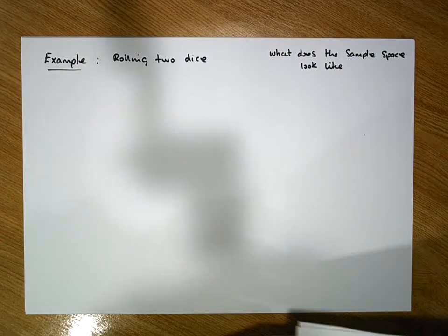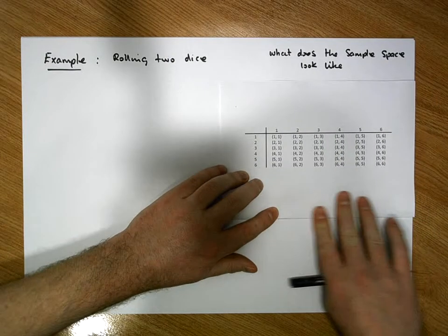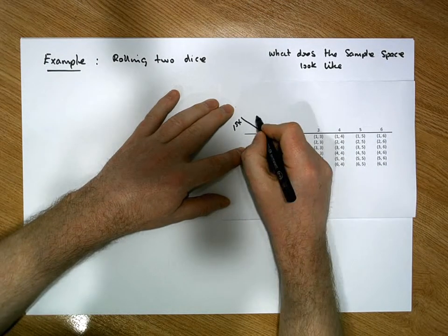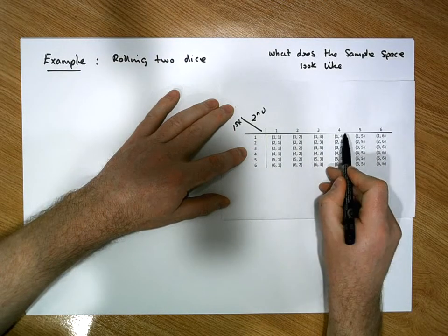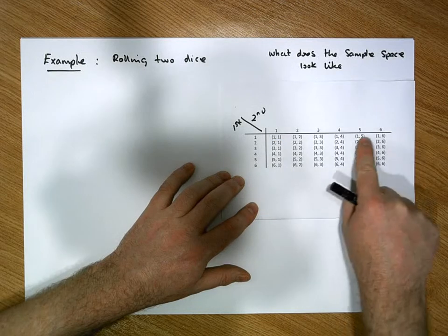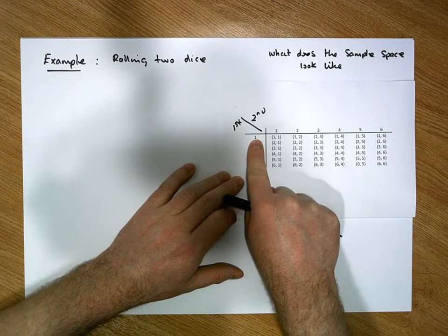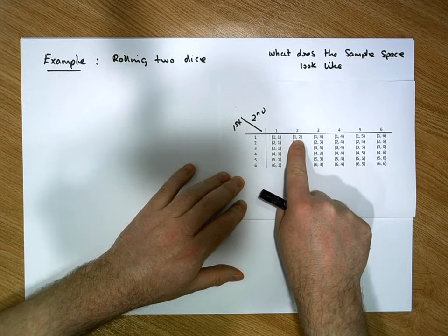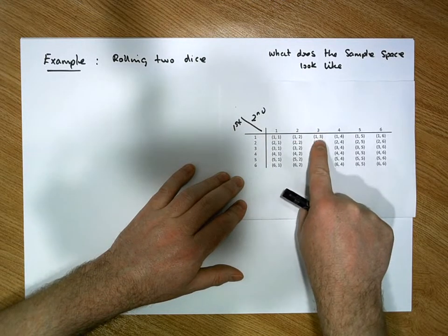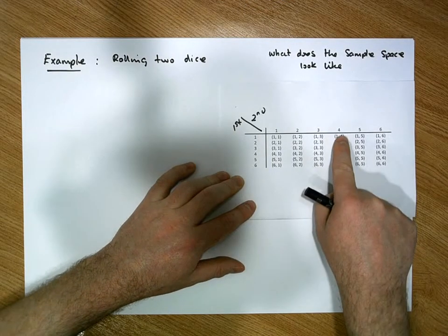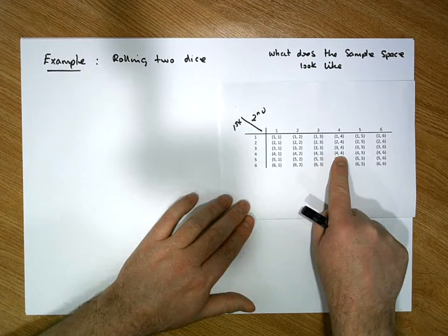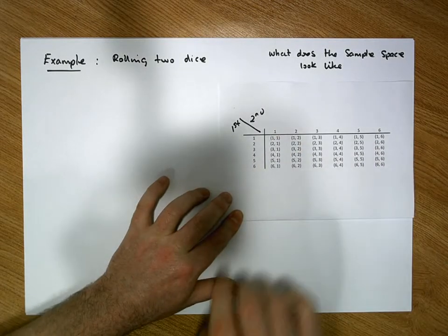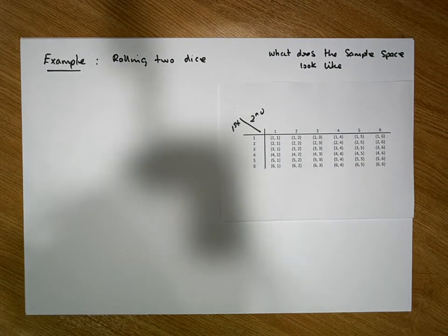What I've done here for this particular experiment is printed out the sample space. The first die is listed down here — one, two, three, four, five, and six — and the second die is listed across here — one, two, three, four, five, and six. We have a listing of all possible ordered pairs: first die one, second die one gives us (1,1); first die one, second die two gives us (1,2), and so on up to (4,4). The sample space consists of 36 ordered pairs.